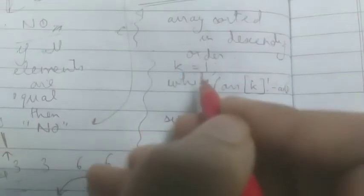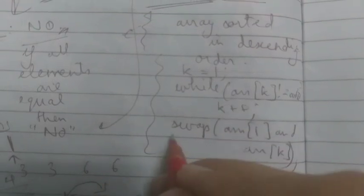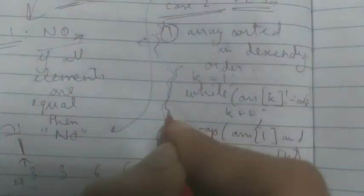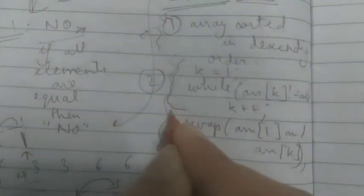To summarize: if all elements are equal, output NO. Otherwise output YES, sort the array in descending order, set k equal to one, while arr[k] is not equal to arr[0] do k plus plus, then swap arr[1] and arr[k]. This is step one, step two, and step three.